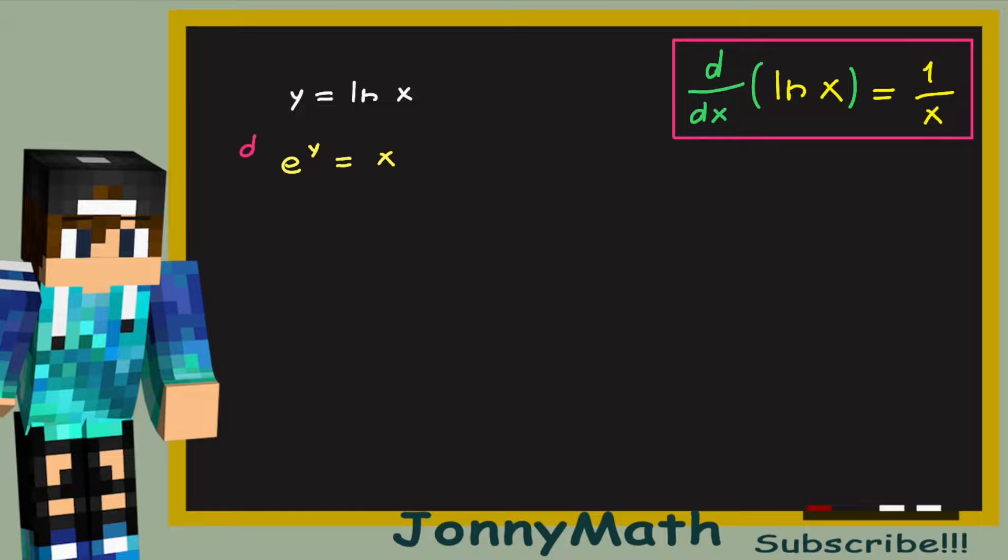Now we can take the derivative on both members, so d over dx on both members. And for the first member, we can apply the chain rule. So this is d over dy of e to the y times dy over dx. And for the second member of the equation, d over dx of x is simply equal to 1.